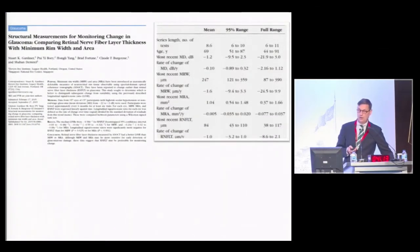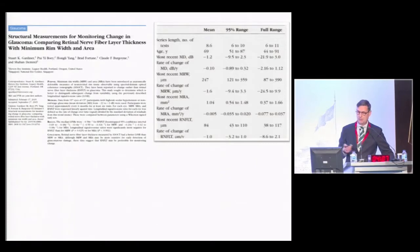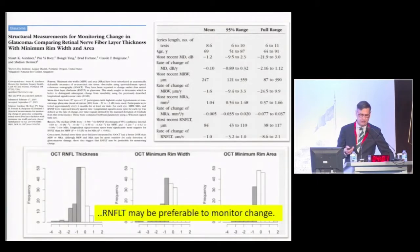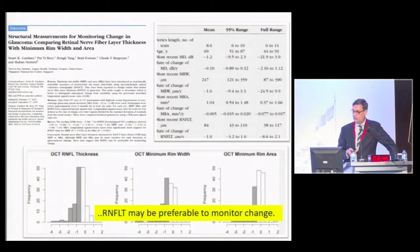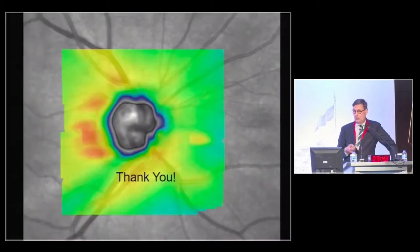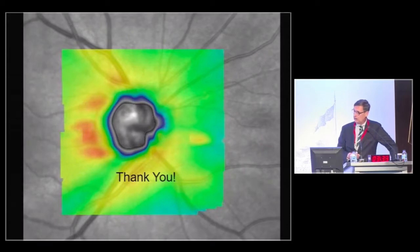In follow-up examination, rim measurements and nerve fiber layer were compared by Burgoyne from Portland. They found that when comparing nerve fiber layer thickness, rim width, and rim area, the nerve fiber layer thickness still showed more progression in the early stages of the disease than the optic disc measurements, suggesting that nerve fiber layer thickness measurement may be preferable to monitor change. In summary, the nerve fiber layer is still a little bit more sensitive than the rim measurement in the course of the disease and for diagnosing early glaucoma.